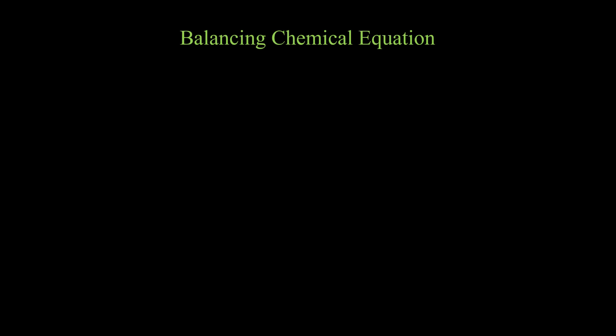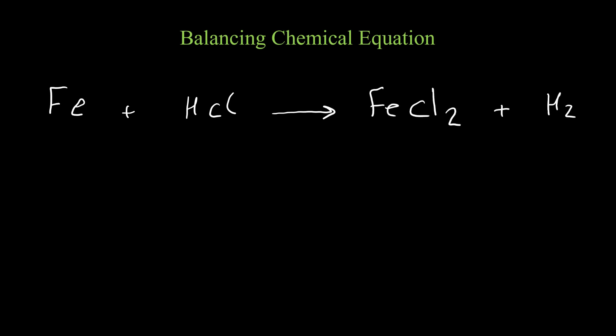In this video I'm going to talk about balancing of chemical equations. Let's start with this example. Balancing of equations is based on the law of conservation of mass — it means atoms are not going to be destroyed or produced during a chemical reaction; they just have a different arrangement. So for each type of atom we should have the same number on both sides of the chemical equation.